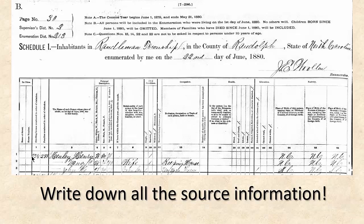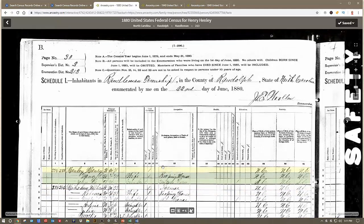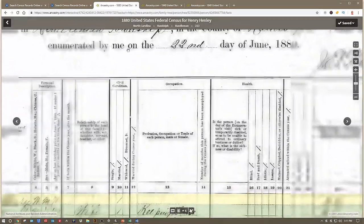We also want to document the dwelling and the family number. I even document the line number a lot of times. White, male, 71 years old. We want to document all of this — there's actually more on this page. I just couldn't show it to you here, but we want to make sure that we're documenting everything. Here I found this record on Ancestry.com, and I just want to zoom in a little bit and show you the different details because it is kind of important.